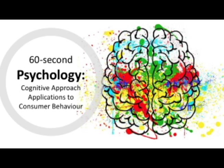Another common cognitive bias used in advertising is authority bias. This is when we are more likely to accept and recall information from someone that we perceive to have an amount of authority — for example, when advertisers use dentists to promote toothpaste.